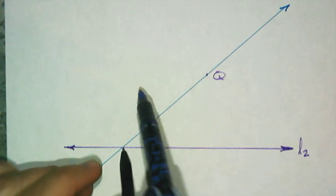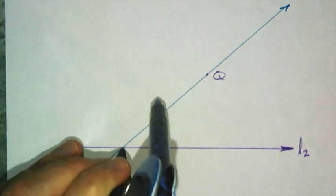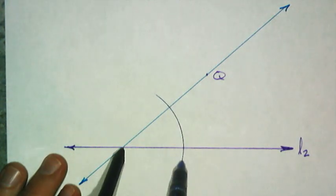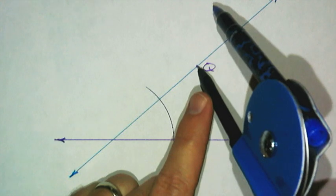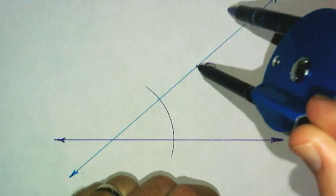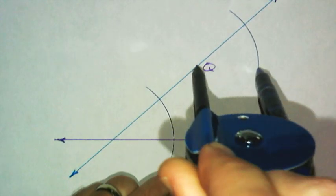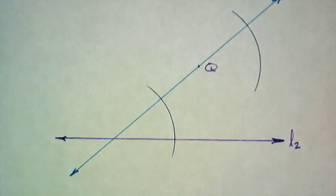you first stab the vertex, swing an arc that hits both sides, then stab Q, the point that we're going through, swing the same arc. Starting to see it.